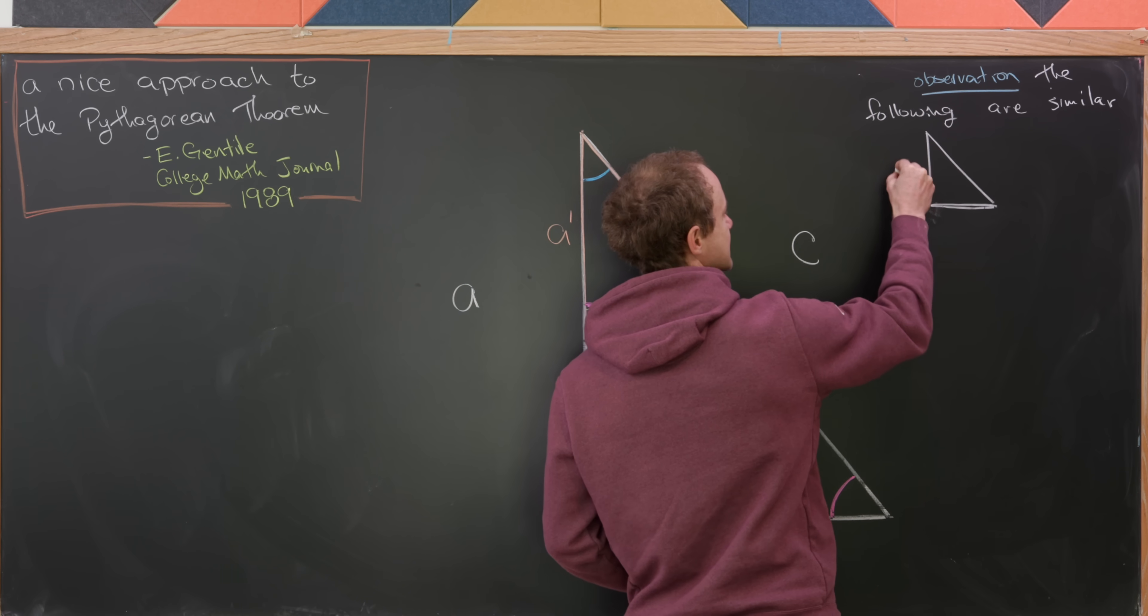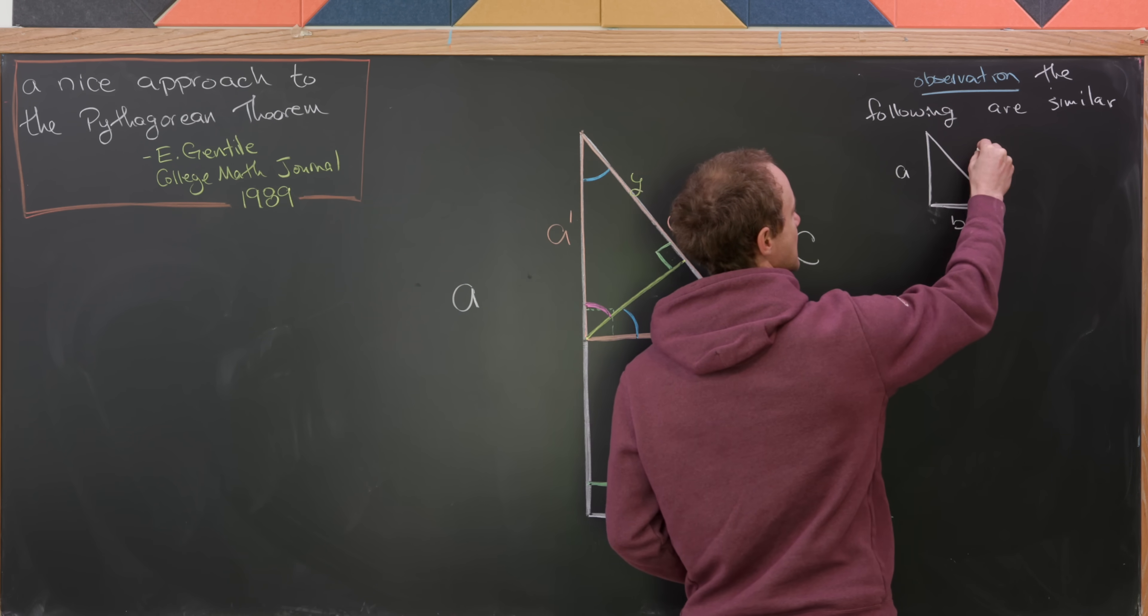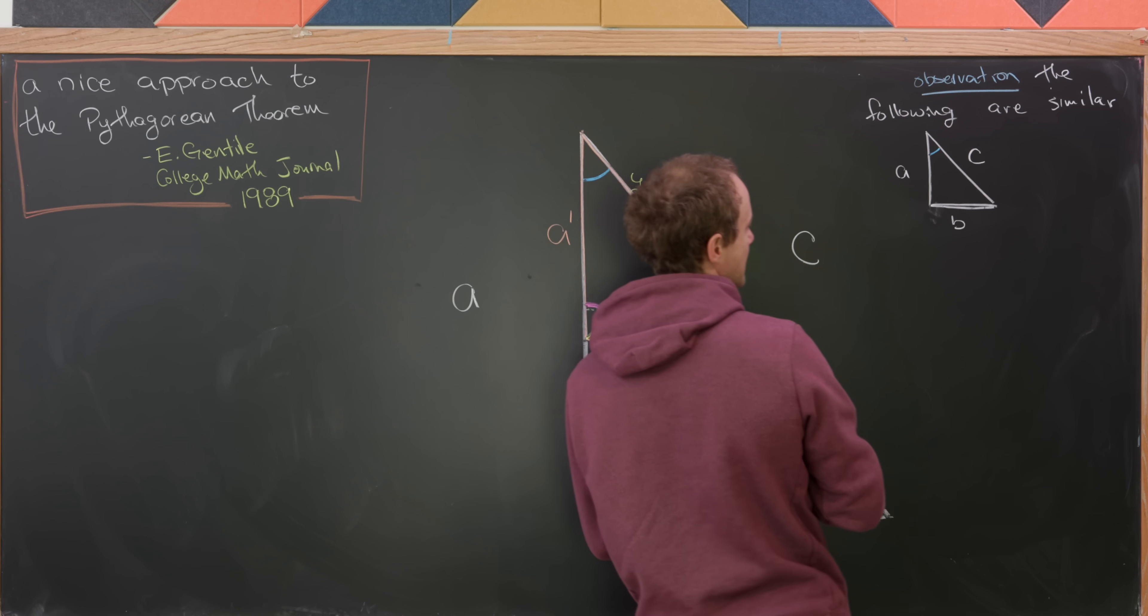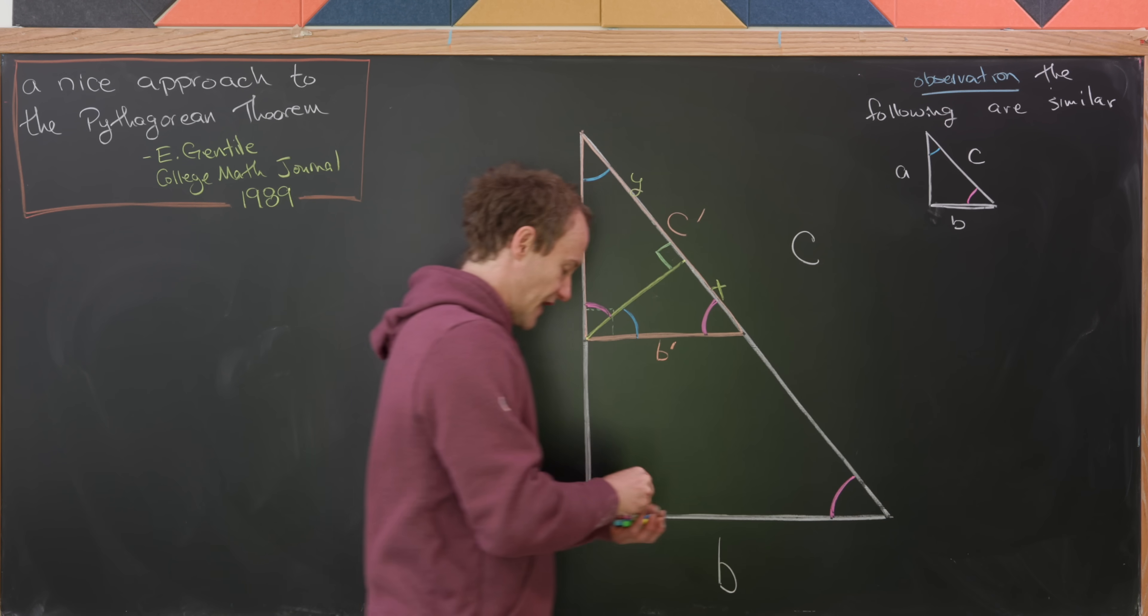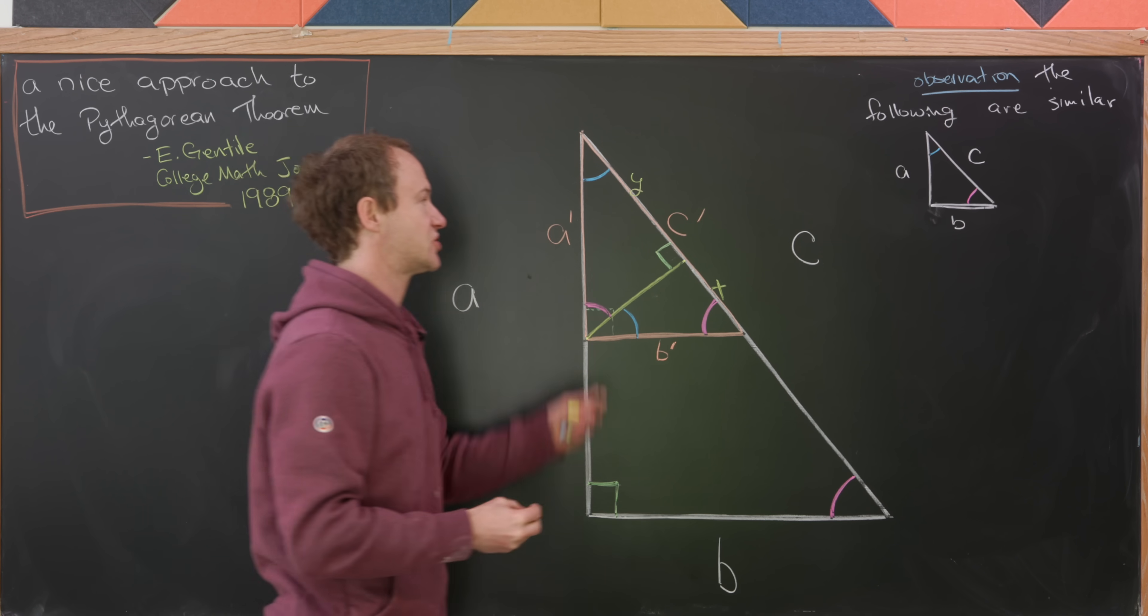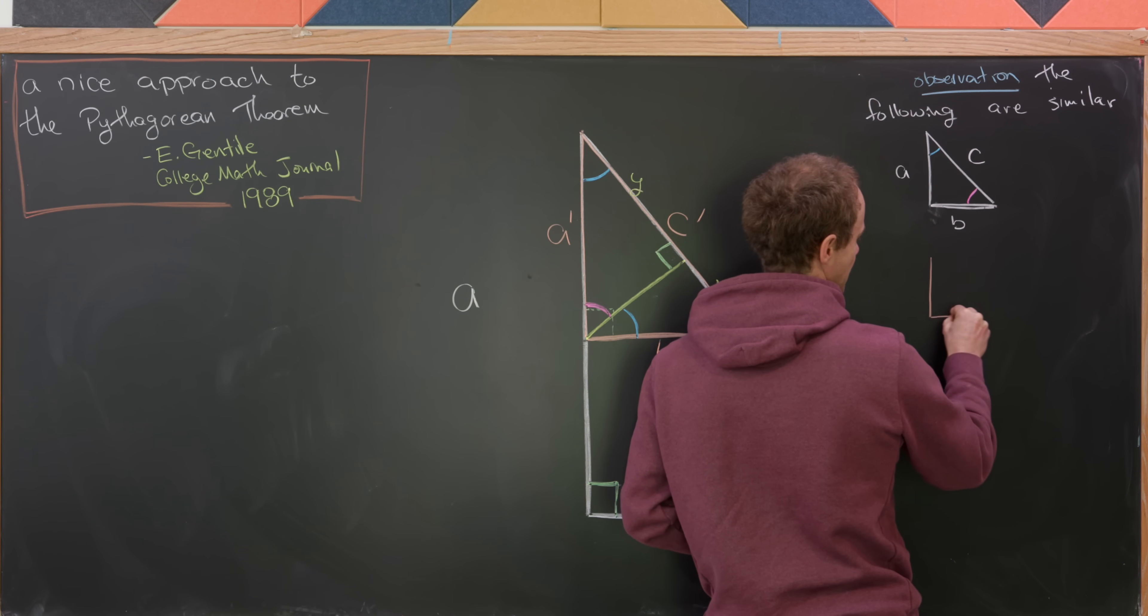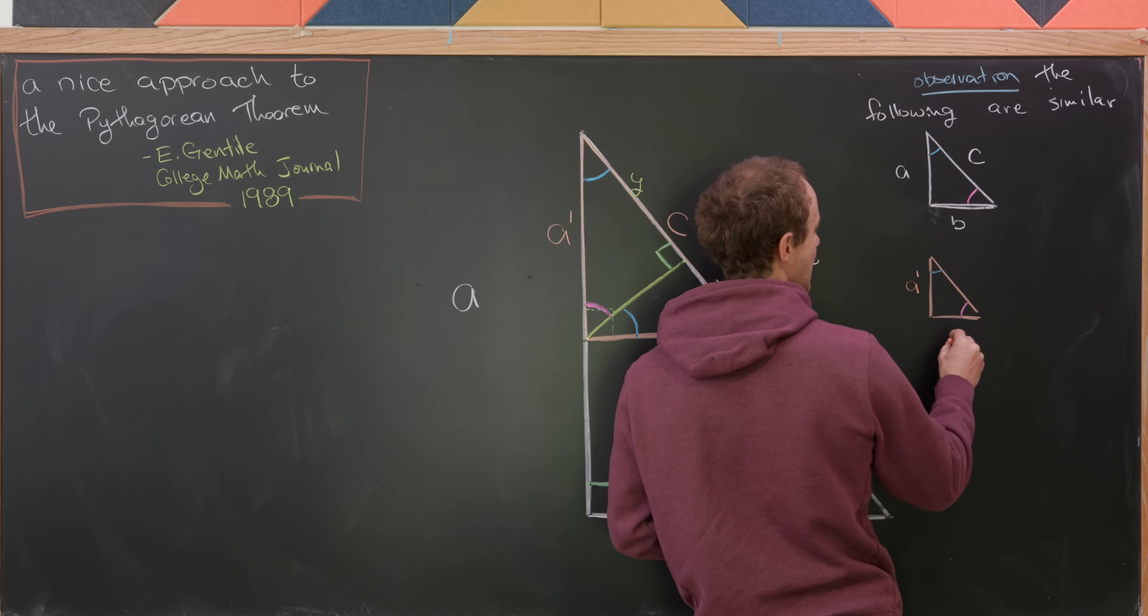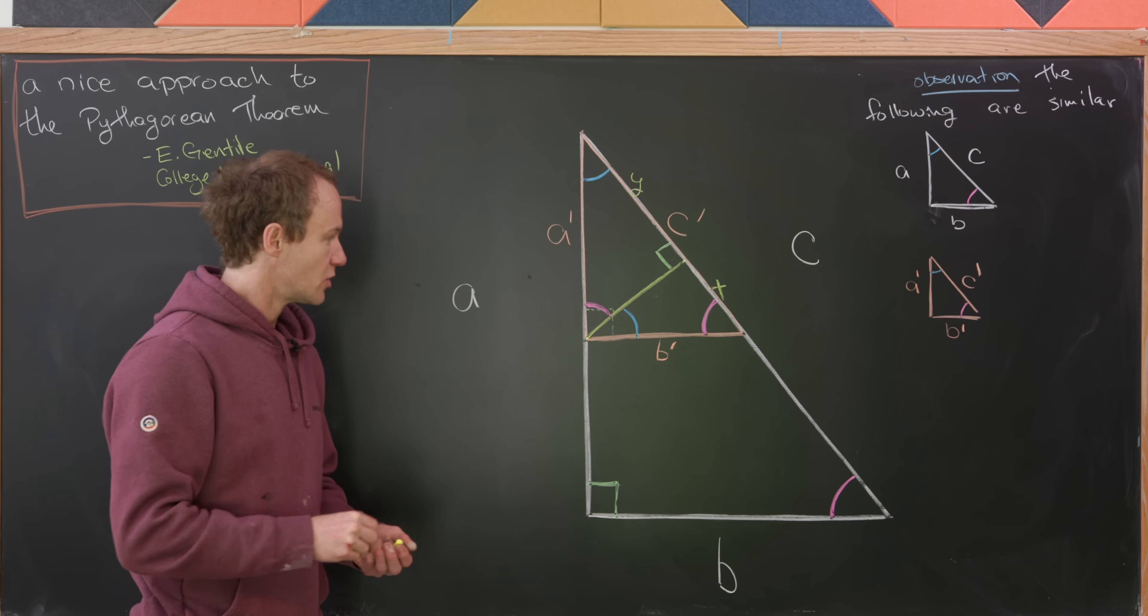Recall that that had side length a, b, and c, with blue angle here and magenta angle here. That one was similar to the one with all peach sides. Let's draw that down as well. The way we laid that out, the blue and the magenta angles were in the same spot. And we had length a prime, b prime, and c prime.